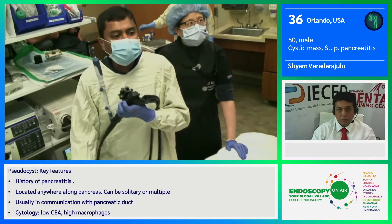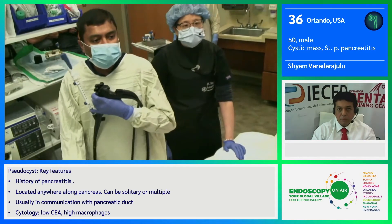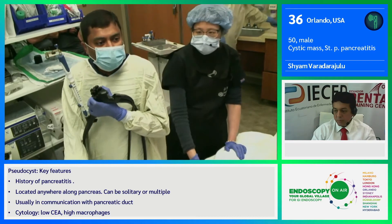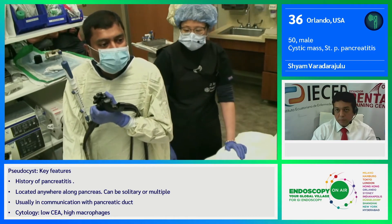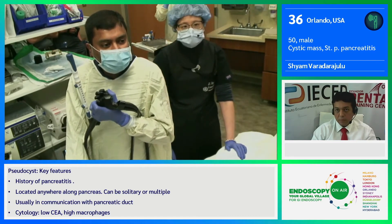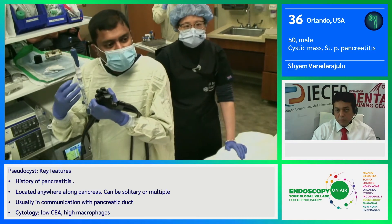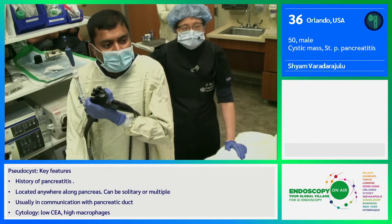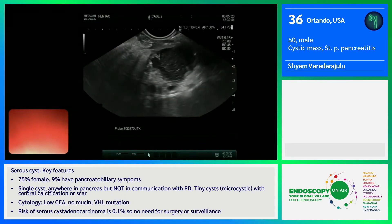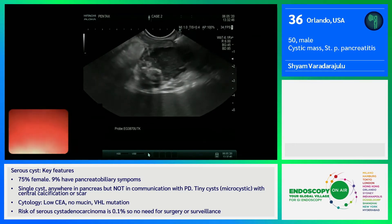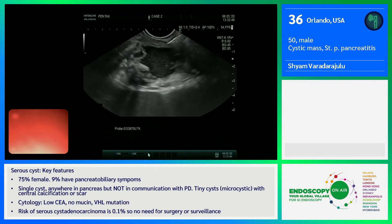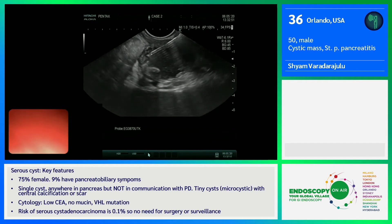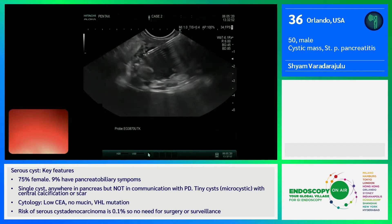I'm using the Pentax linear EUS scope. I'm going to find a good window to puncture the cyst. I'm going for those projections at the very end — something in me tells me this is nothing but epithelial debris, but the surgeon was fairly convinced this is a cystic neoplasm. So I'm going to puncture this collection and take the stylet out and aspirate some fluid.